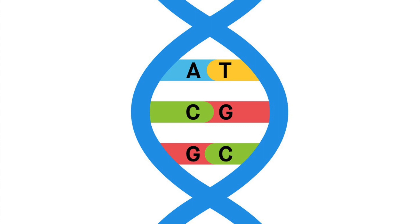DNA is double-stranded, so each chromosome has two backbones with the letters in the middle pairing up in a very simple way. A's always pair up with T's, and C's always pair up with G's. In this way, one strand can be used to correct errors in the other strand, and importantly, it can also be used as a template for making new and identical DNA molecules.